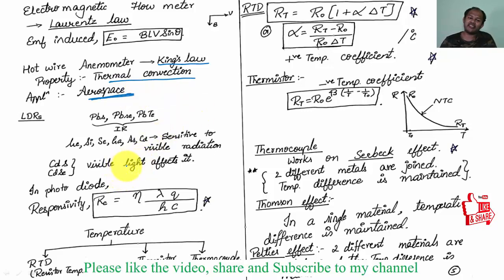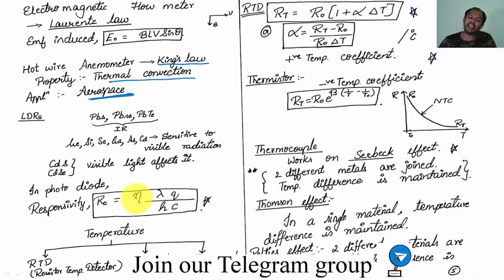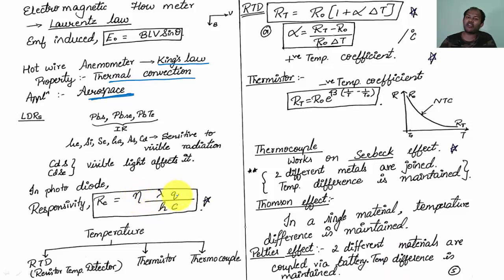For light-dependent resistors (photodiodes), the photodiode operates in the third quadrant, whereas a solar cell operates in the fourth quadrant. For a photodiode, you talk about responsivity, whereas for a solar cell you talk about fill factor. Responsivity is given by: R = (eta × lambda × Q) / (h × c), where eta is efficiency, lambda is operating wavelength, Q is charge of electron (1.6 × 10^-19), h is Planck's constant, and c is the speed of light (3 × 10^8 m/s).